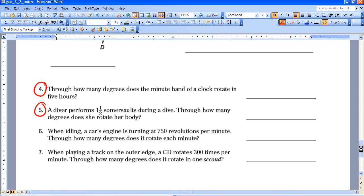Through how many degrees does a minute hand of a clock rotate in five hours? So if you think about a clock, the minute hand of a clock, it rotates around 360 degrees. And how many times would it rotate in five hours? So there are 60 minutes in an hour,